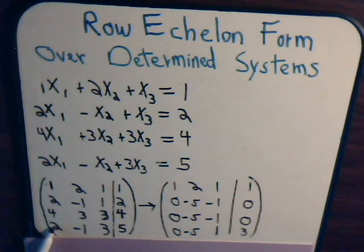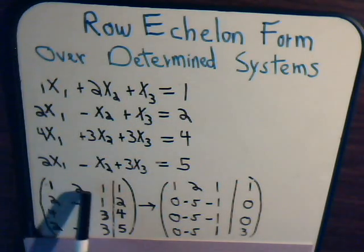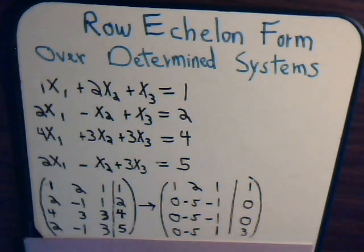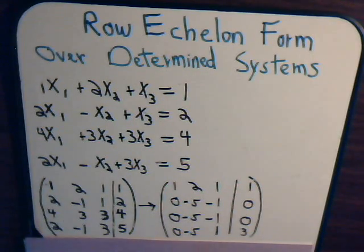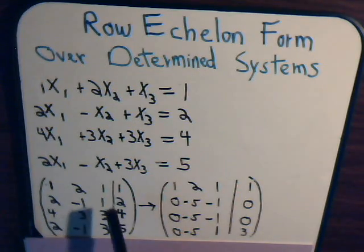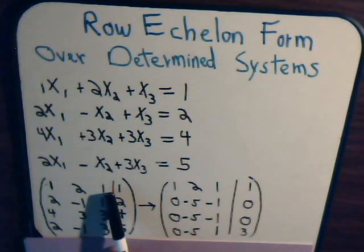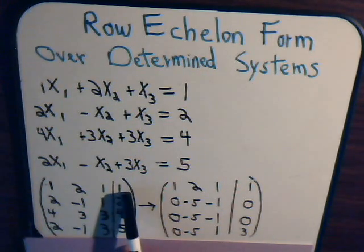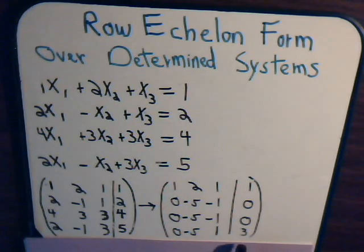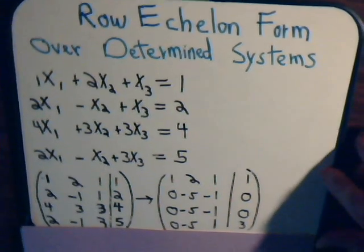Now, we want this one to be 0. So, again, we imagine multiplying the first row by negative 2, and adding it to this row. So, this comes out 0. Negative 2 times 2 is negative 4, that's negative 1, that's negative 5. Then, we have negative 2 times 1 is 2, and negative 2, add to 3, we get 1. Negative 2 times 1 is negative 2 plus 5 gives us 3. So, it takes us down to this augmented matrix.